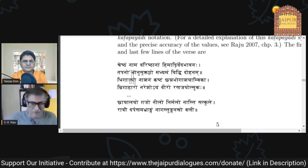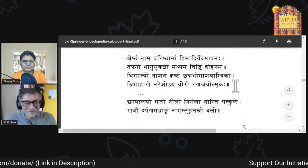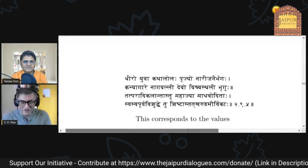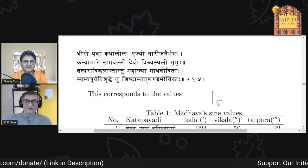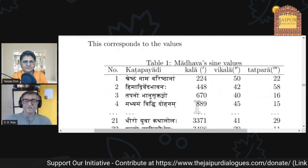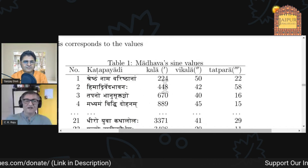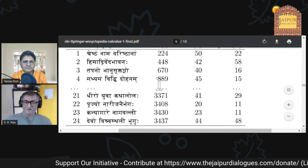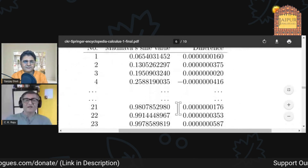This is the table of sine values. The notation here is different from Aryabhata's notation — this is the Katapayadi system used in the Aryabhata school in Kerala. 'Sreshtham nam varishtham nam' is not a sentence in Sanskrit; it is a number representing the kala, vikala, and so on. Let me give you the table in decimal format.